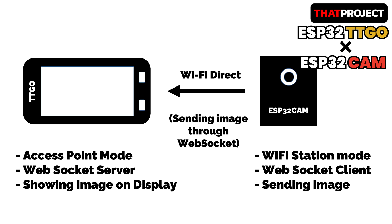Let's see how TTGO works. TTGO works like a server. The Wi-Fi operates in access point mode and waits for the client to connect. At the same time, the WebSocket server is opening. The client connected through Wi-Fi tries to connect to the WebSocket. When the connection is established normally, the JPEG image starts to come in from ESP32 cam. The image is put on the TTGO screen until one side disconnects. It's pretty simple and intuitive.